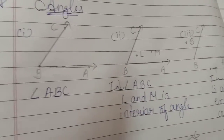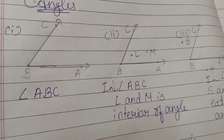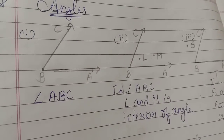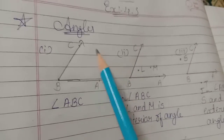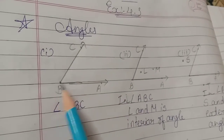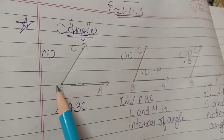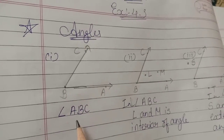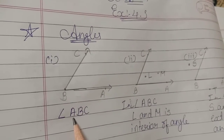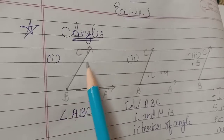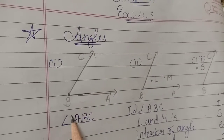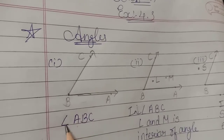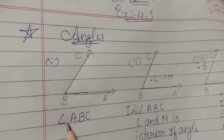Here three examples are given. In the first example, we will learn about the angle. When two rays join at a common point, it is called an angle. We will write it as angle ABC. This is the sign of an angle.